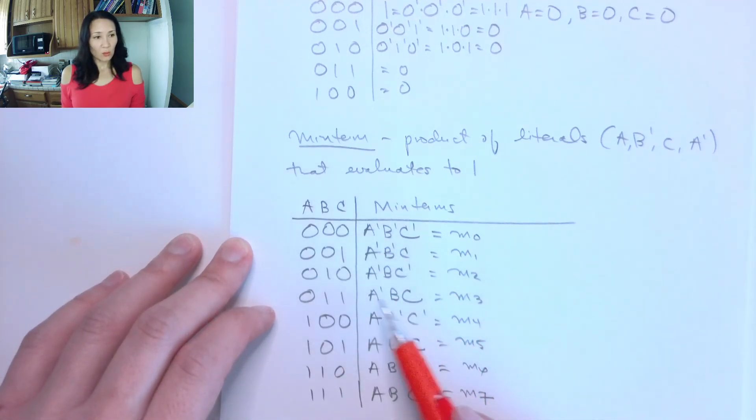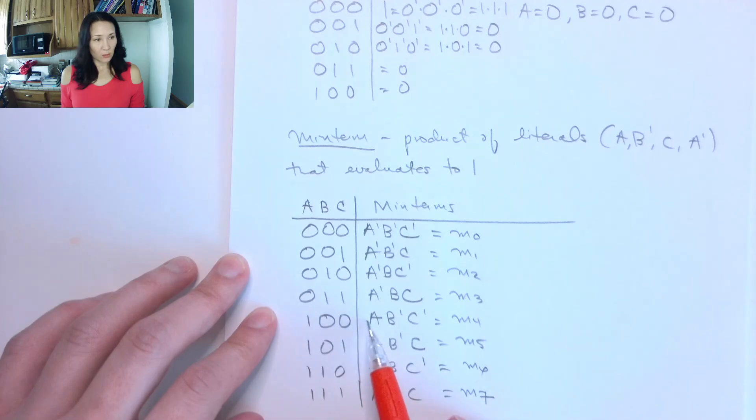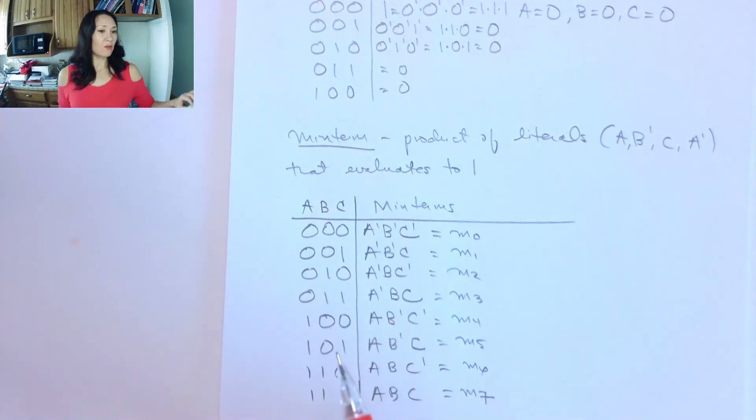And the way we determine which ones are complemented is basically for our input row, wherever you see a 1, you don't complement. Wherever you see a 0, you complement. So let me know if you have questions in the next video. We'll use this new terminology to define the sum of products form.